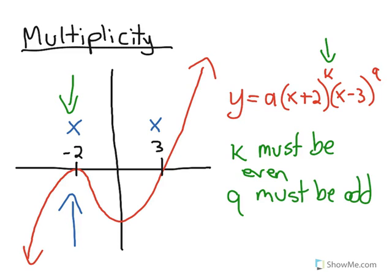So that's really all that multiplicity is commenting on, is this root. Will it have an even exponent or an odd exponent? And that's totally based on whether it bounces off the x-axis or goes right through it.